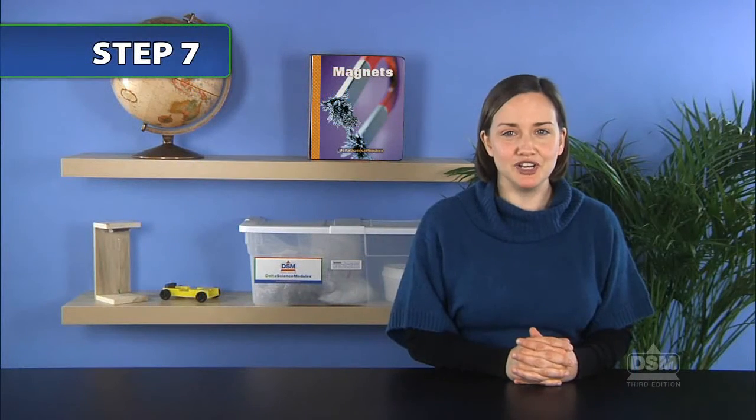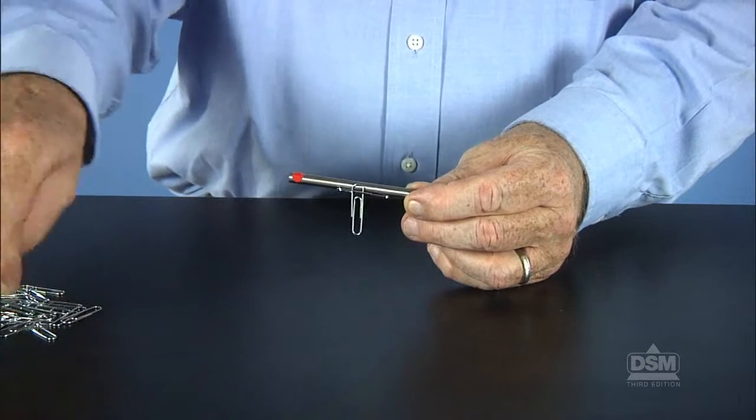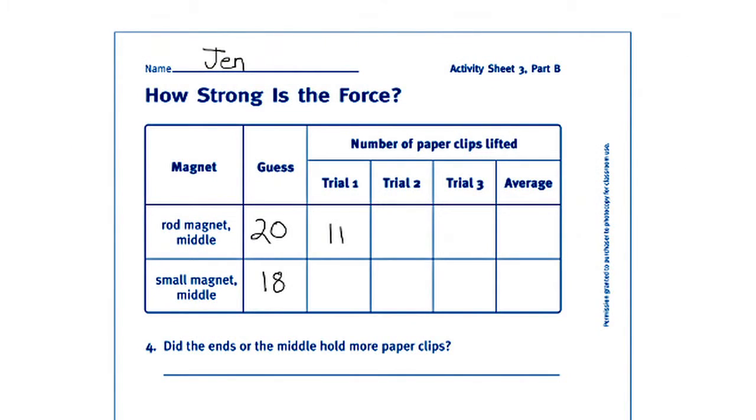After the students have made their predictions, tell them to begin picking up paperclips using the middle of each magnet. Remind them to write down their results, to repeat the procedure three times, and to find the average number of paperclips held at the middle of each magnet.